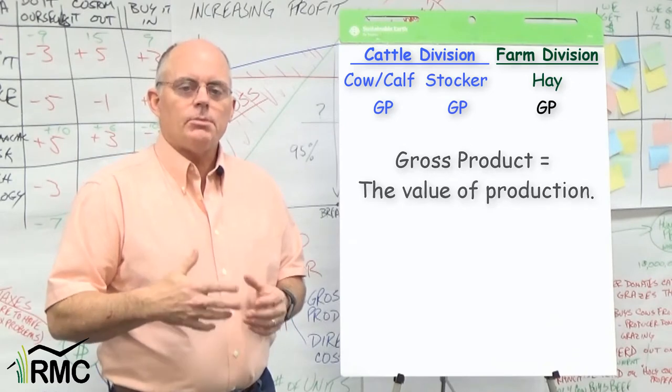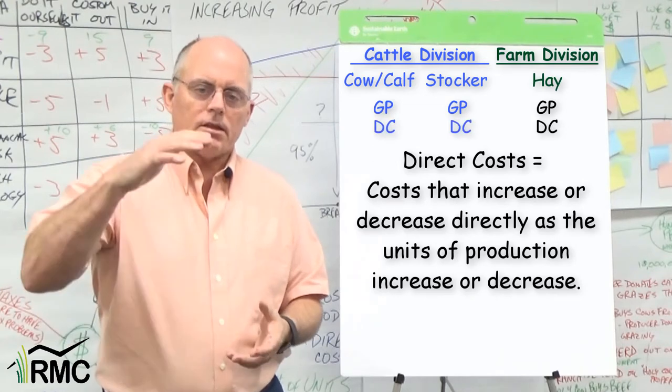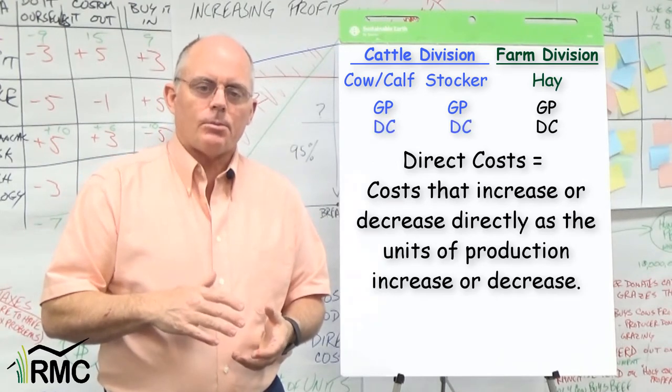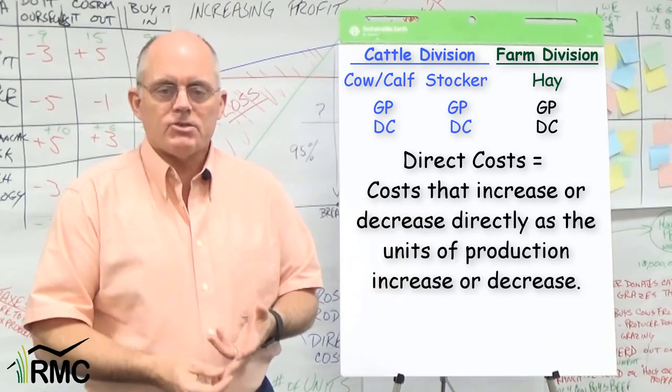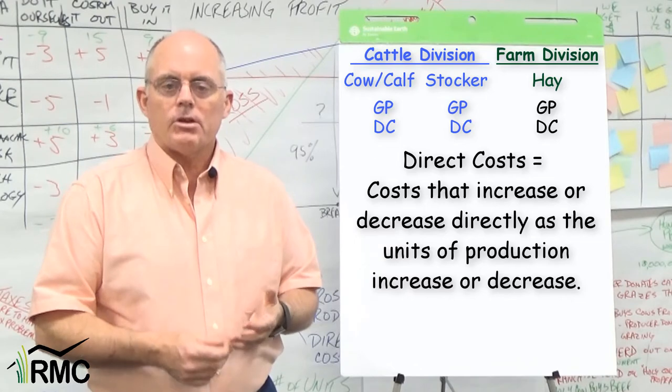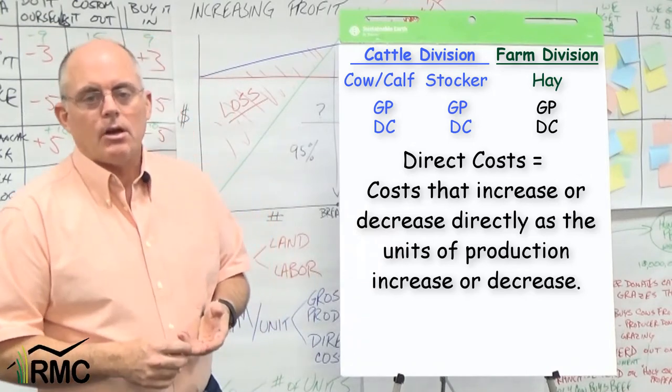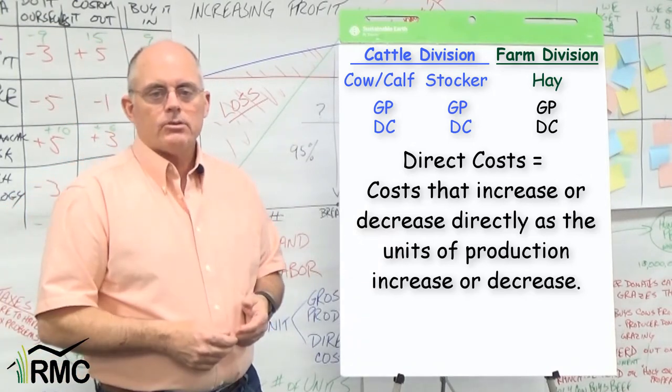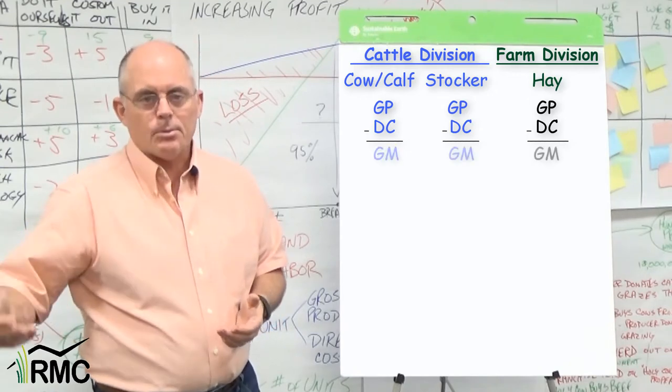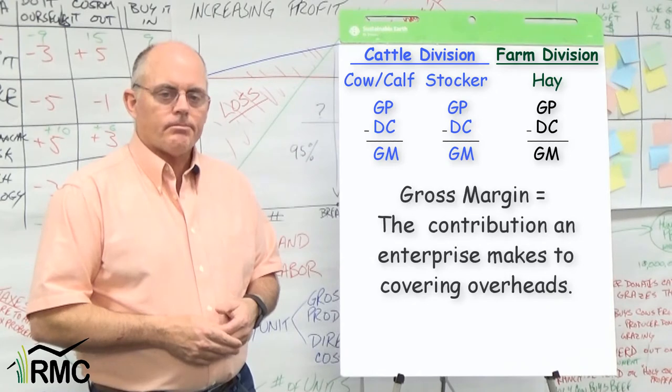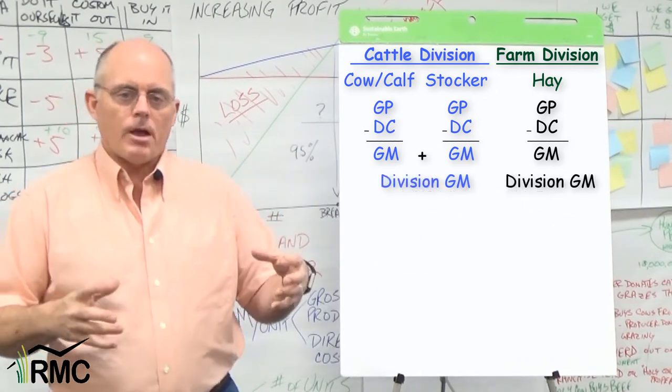We ought to be able to make some reasonable predictions about our direct costs. Direct costs are the costs that change directly as we change the scale of the enterprise. More animals means more feed. So we estimate how much mineral, how much vaccine, how many ear tags we'll need for the cow-calf enterprise and the stocker enterprise. We also need to make some decent guesses about the direct costs that we'll incur in the hay enterprise. We subtract the direct costs for each enterprise from the gross product for that enterprise to calculate the enterprise gross margin. We determine the division gross margin by adding the gross margins of all the enterprises in each division.